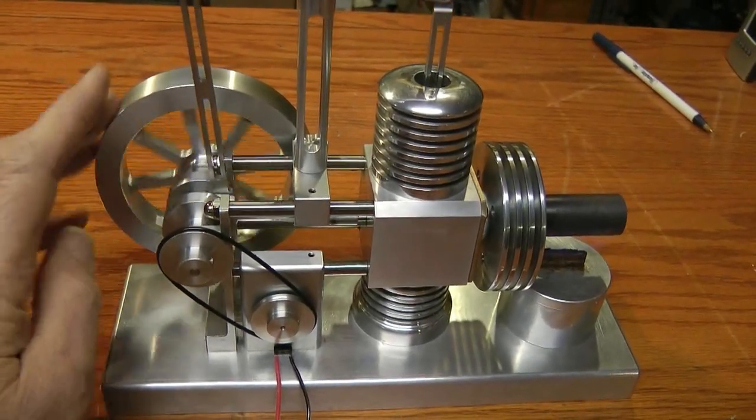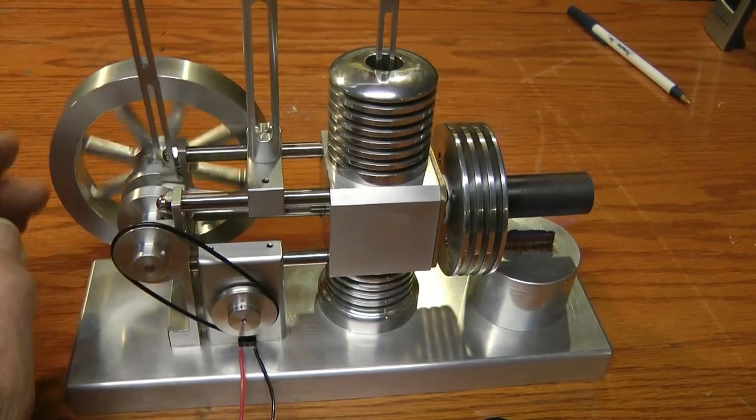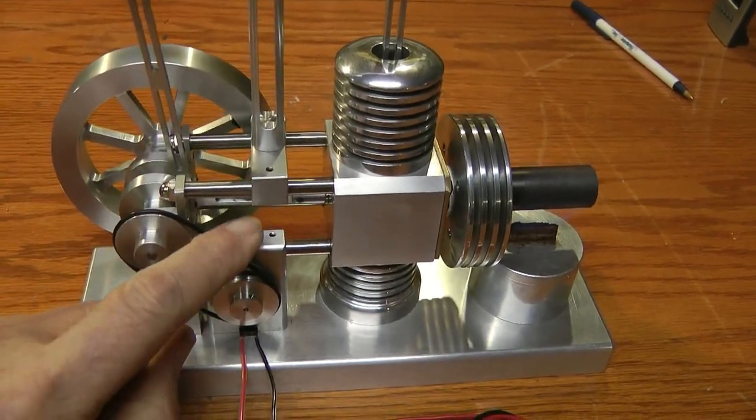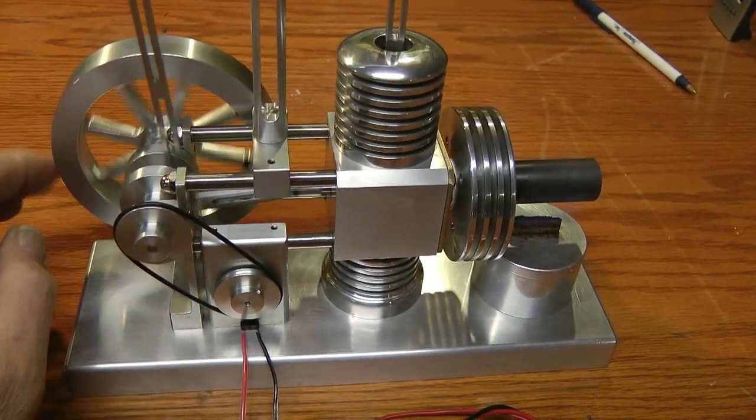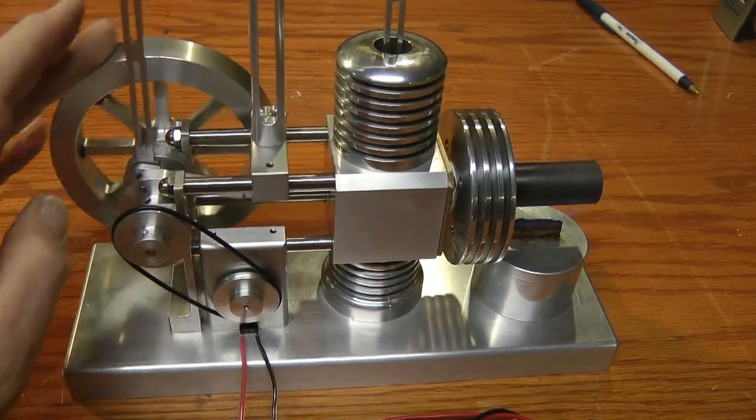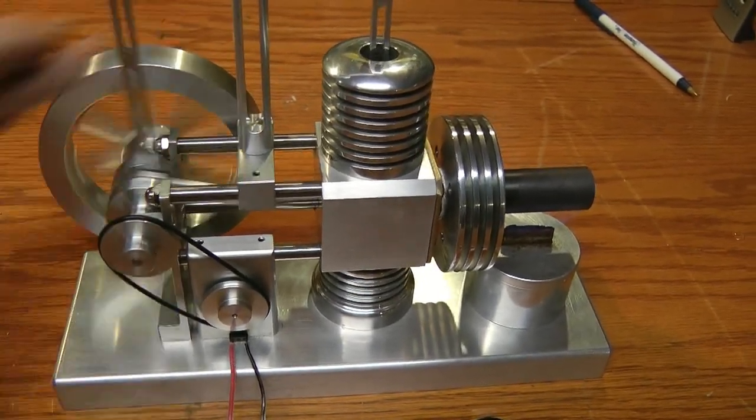Okay, this is the direction that the flywheel turns. So that means that as this is running, the top side of the o-ring will be the tightened side. So let's give it a go.